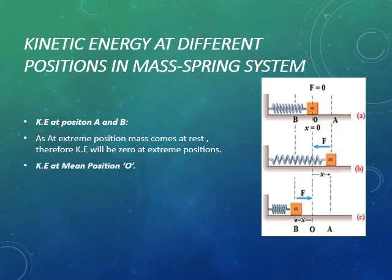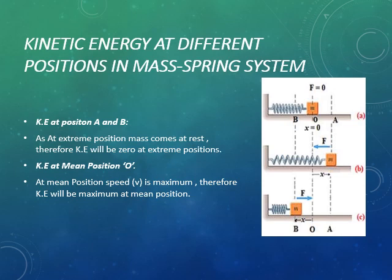Now let's discuss kinetic energy at different positions in the mass-spring system. We have three positions: position O (mean position), and positions A and B (extreme positions). At the extreme positions the mass comes to rest, so velocity becomes zero. Since kinetic energy equals ½mv², when velocity is zero, kinetic energy is zero at the extreme positions. At the mean position, speed is maximum, therefore kinetic energy is maximum at the mean position.